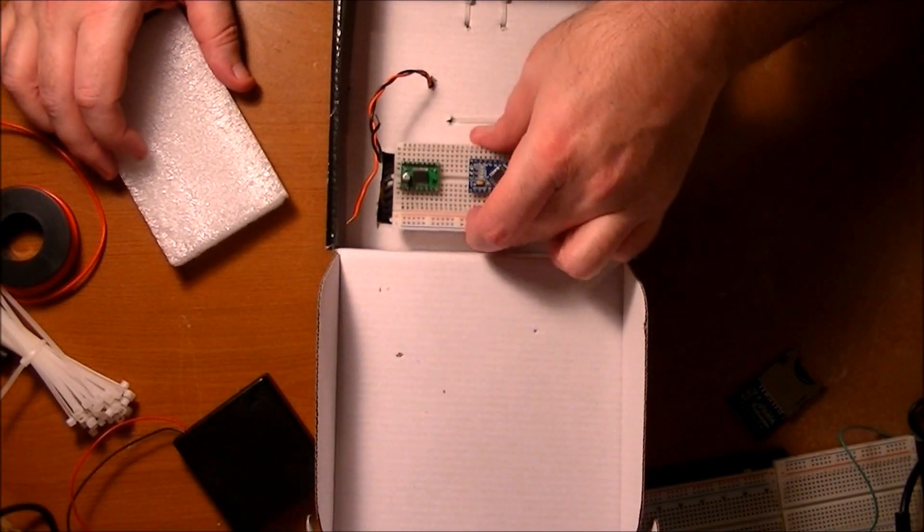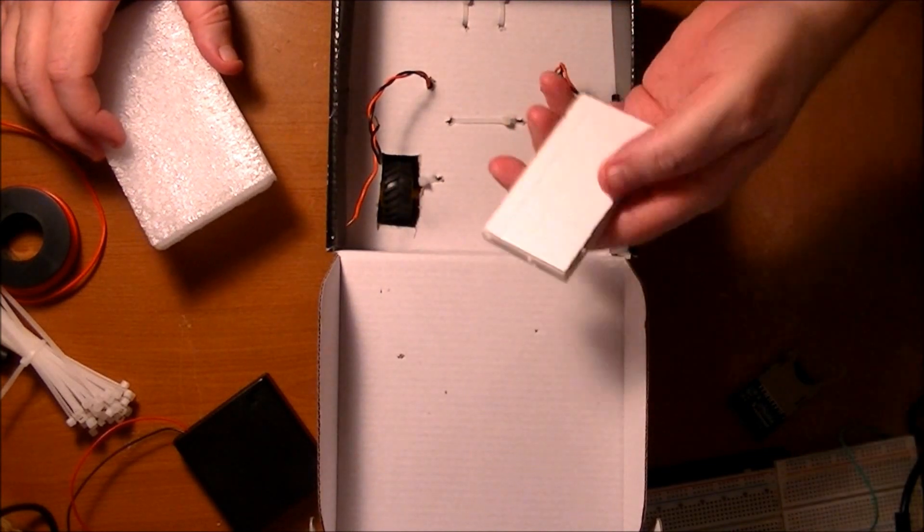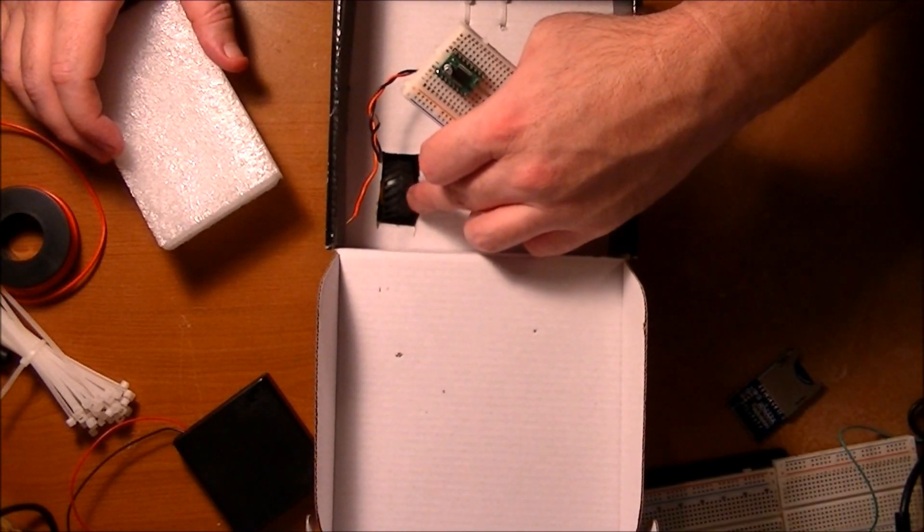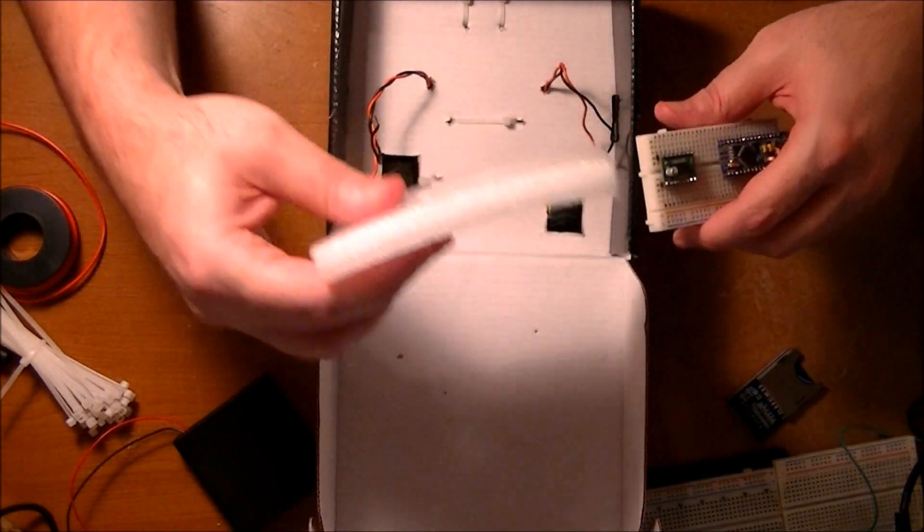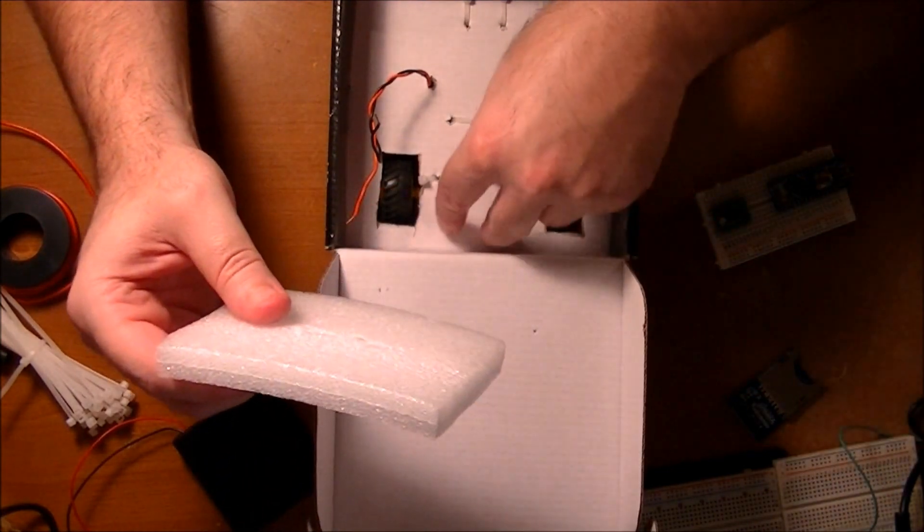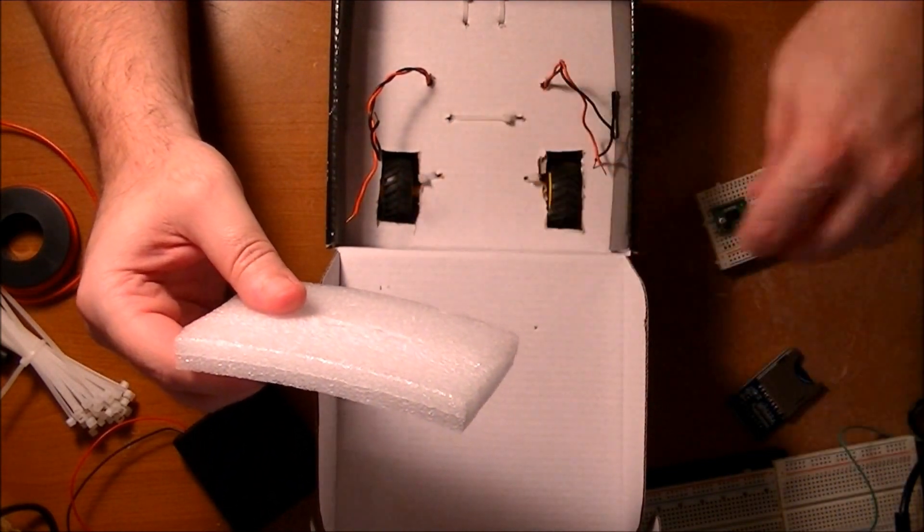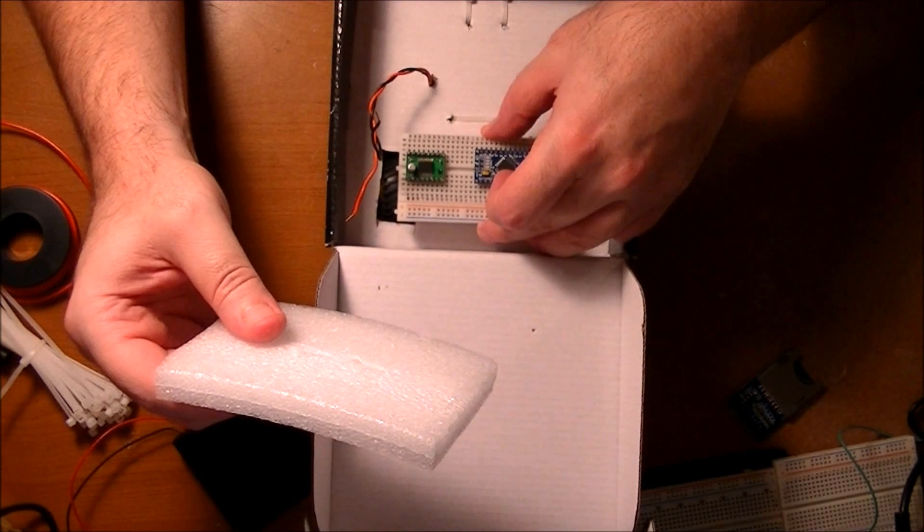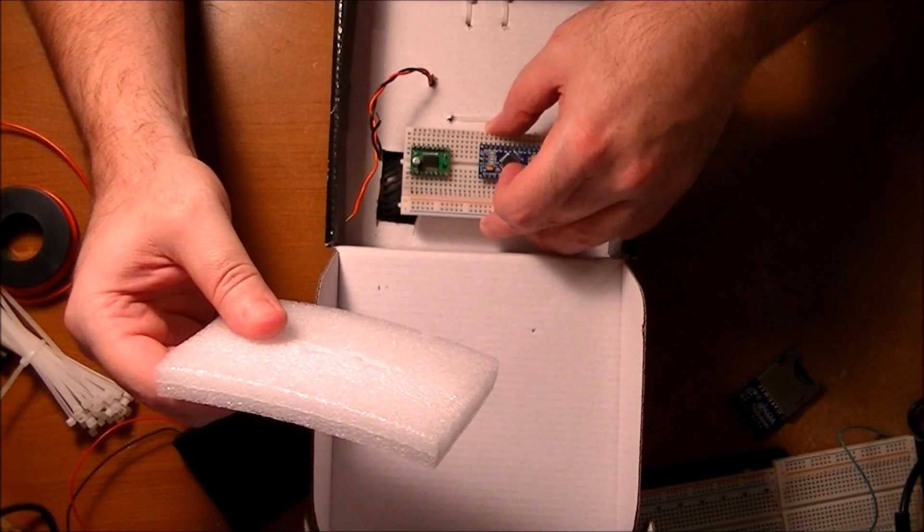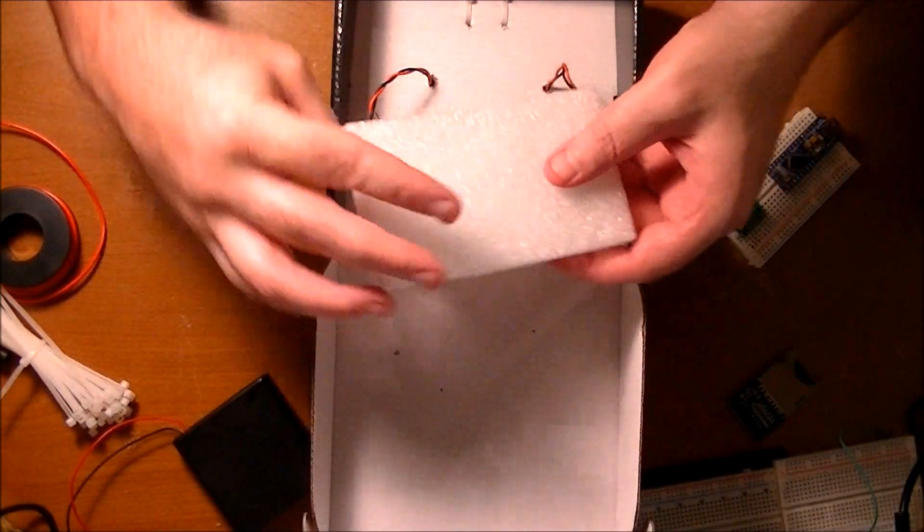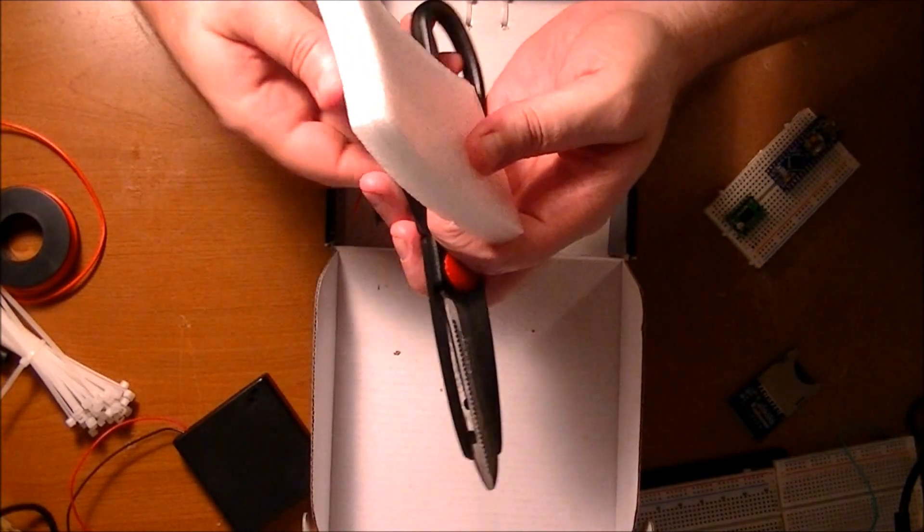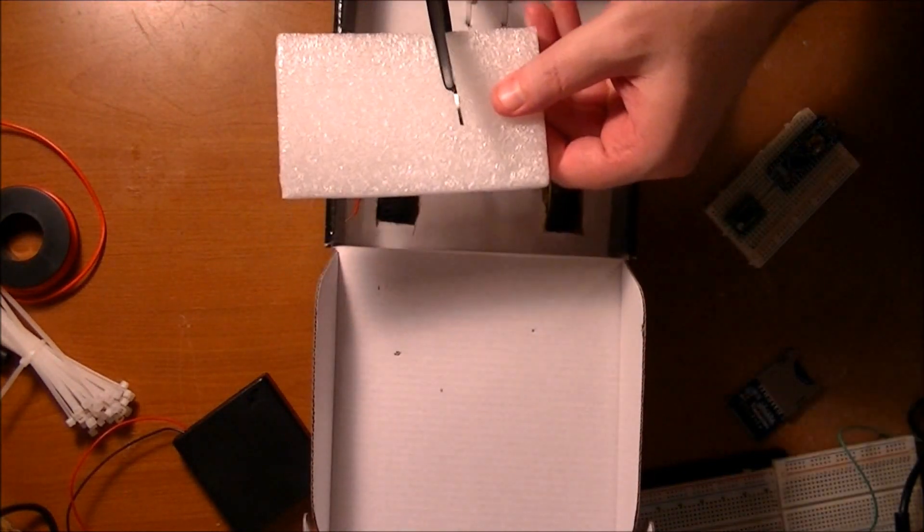I'm going to mount the battery pack and breadboard here but to get the height I need to come up maybe a half inch or so. To get the height I'm going to use this piece of foam here. I'm just going to cut a piece of foam out, put it in here, glue it down, and then the breadboard can ride on top of that foam right above the tires. So that should work out good.